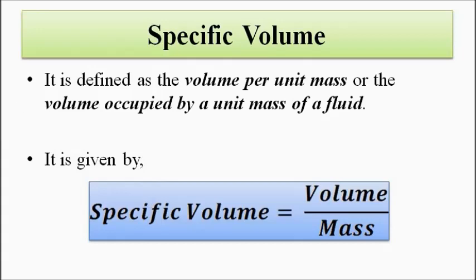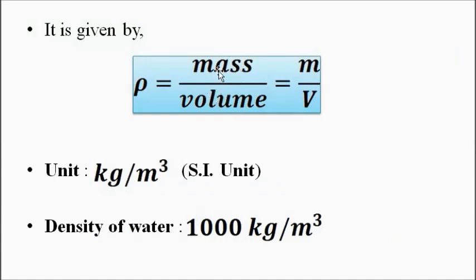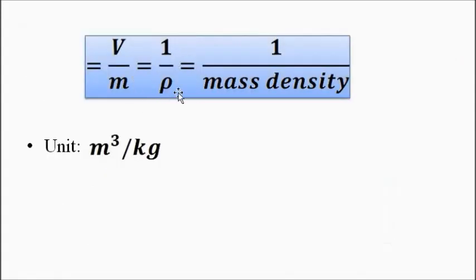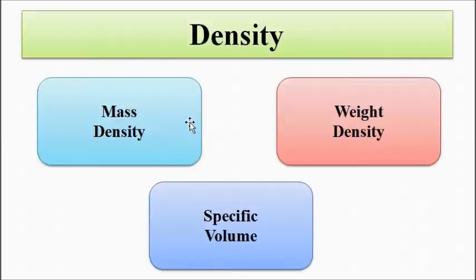In mass density it was mass per unit volume, but in specific volume it is the volume per unit mass — that is, the volume occupied by a unit mass of a fluid. It is the ratio between the volume of the fluid and the mass of the fluid, so it is the reciprocal of mass density. Its SI unit is meter cube per kg.